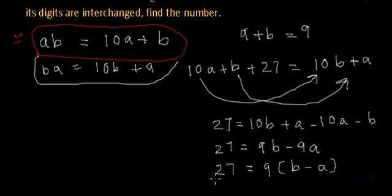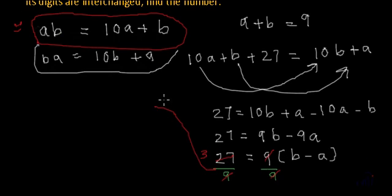So if we solve it we will get 27 is equal to 10B minus B is 9B and minus 10A plus A will be minus 9A. And this can be written as 27 is equal to, since we have 9 in both the terms, so we can take it as common. So inside the bracket we will have B minus A.